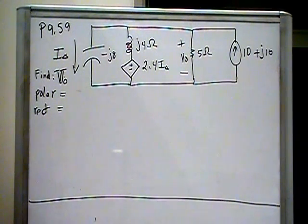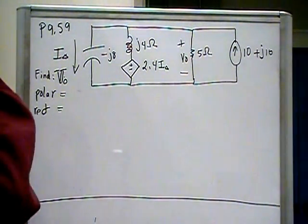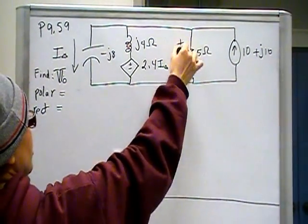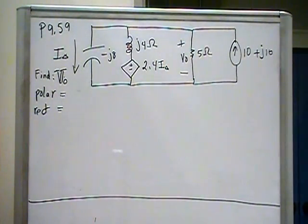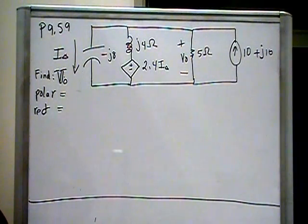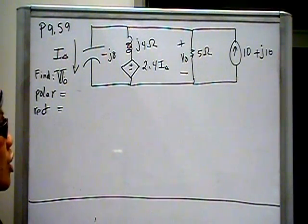So when you first look at this, we know that the instructions say to find this phaser, which is the voltage across the 5-ohm resistor. And we want to find it both in polar form and in rectangular form. The instructions say specifically to use node voltage. I would have anyways, because the way it's constructed, it just makes sense.